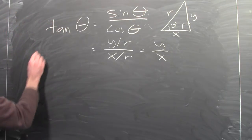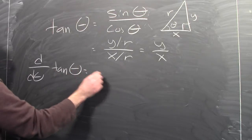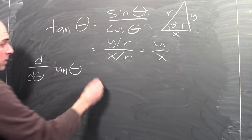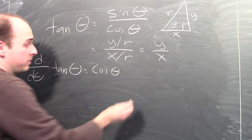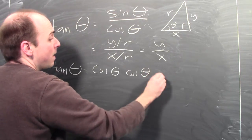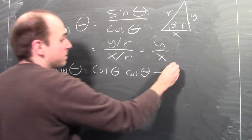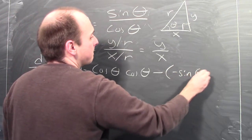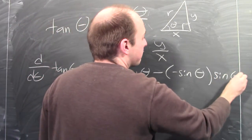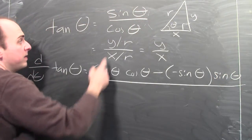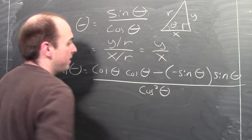I'll use the quotient rule. The derivative of tangent theta is the derivative of the numerator, which is cosine, times the denominator, which is cosine, minus the derivative of the denominator — which is minus sine — times the numerator, which is sine. And this whole thing is over the denominator squared, cosine squared theta.